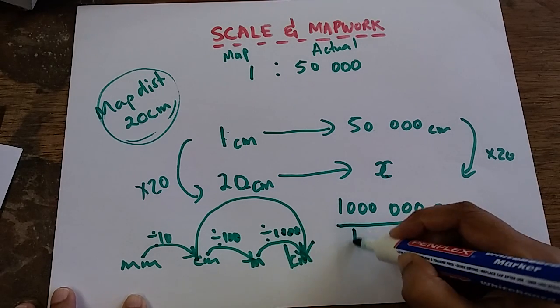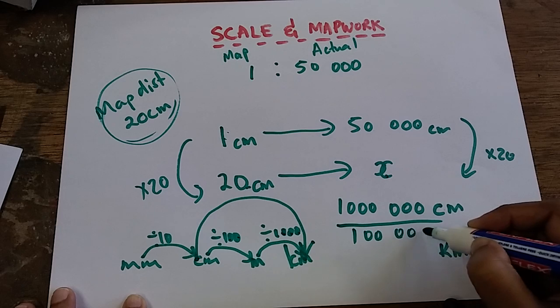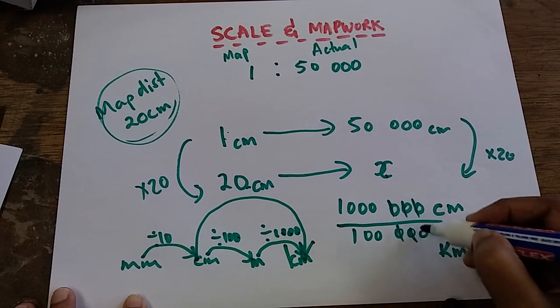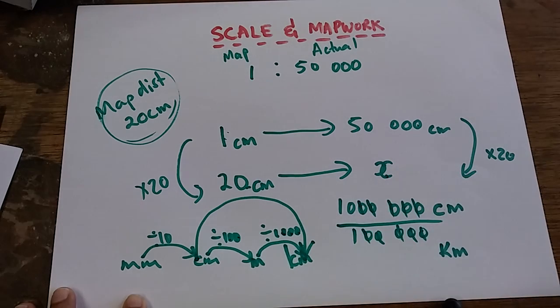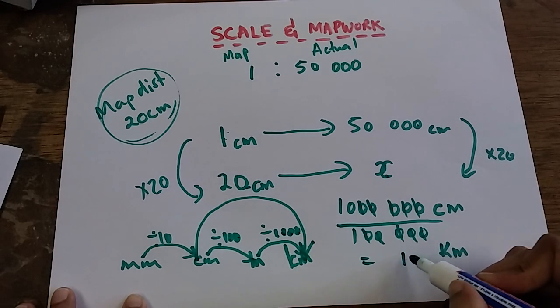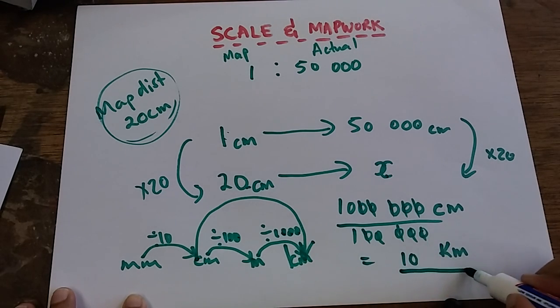Which means 1 million centimeters is equivalent to 10 kilometers. This means 1 million centimeters is equivalent to 10 kilometers.